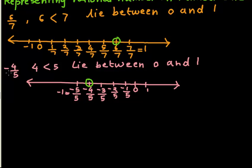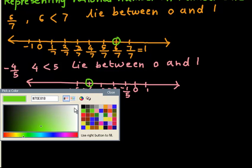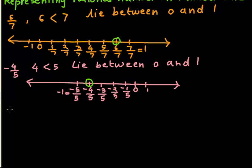Now I am taking another example as 8 over 5. Now here you can see that 8 is greater than 5, so this is an improper fraction.